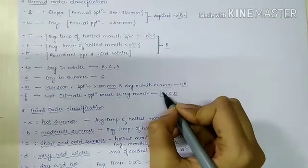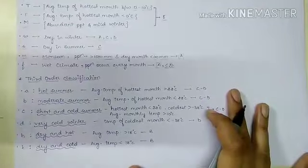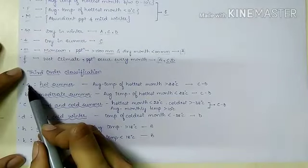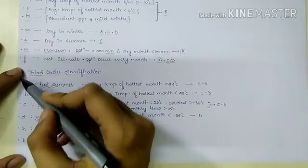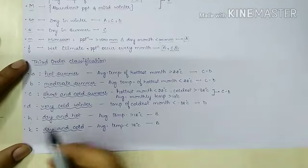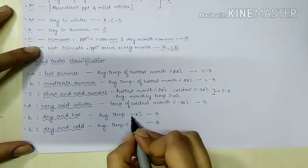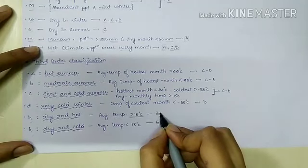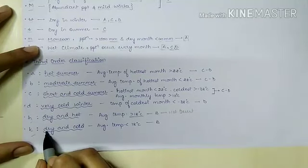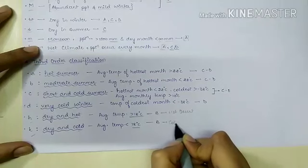A is tropical climate, C is mesothermal, and D is microthermal. In the third order classification, there are five subdivisions: small a, b, c, d based on range of temperature, plus h and k. H represents dry and hot weather with average temperature above 18 degrees Celsius, representing hot deserts. K represents dry and cold climate with average temperature below 18 degrees Celsius, representing cold deserts.